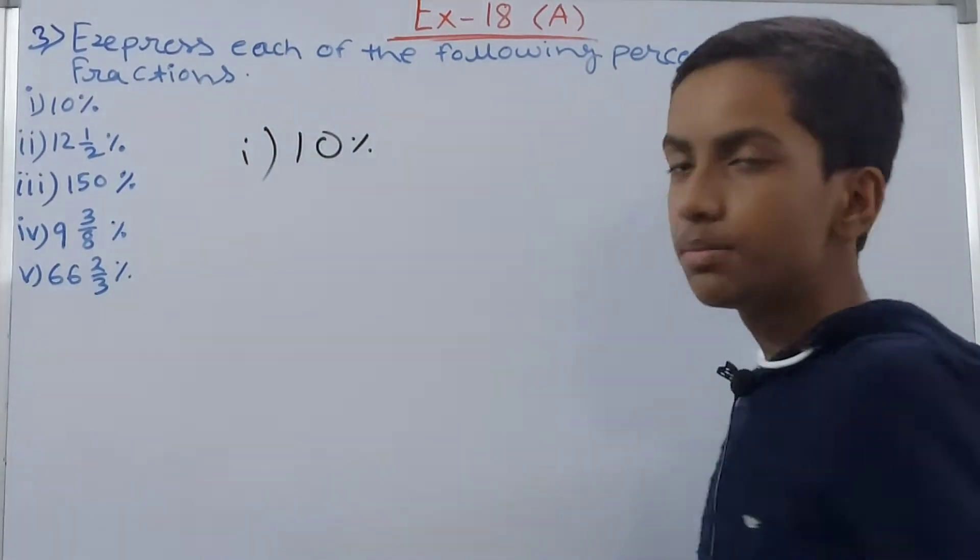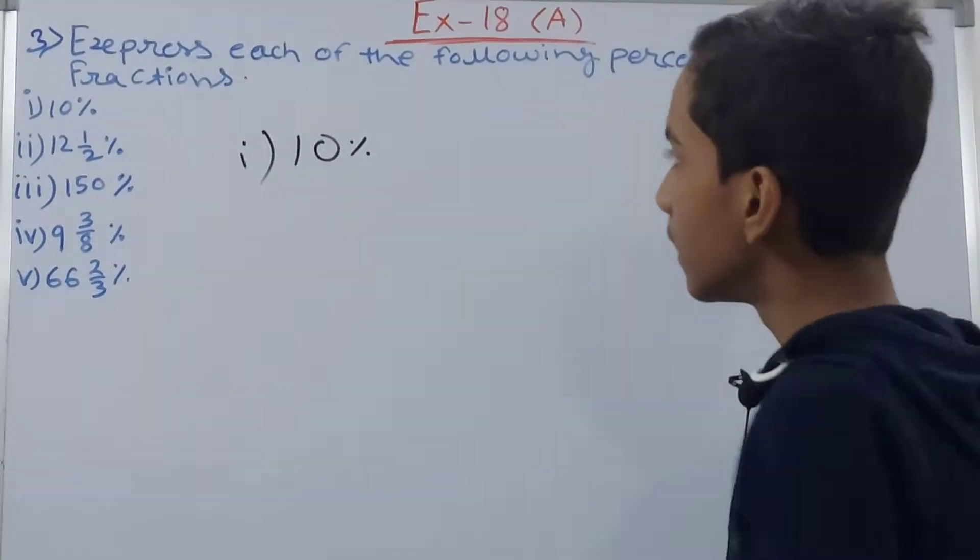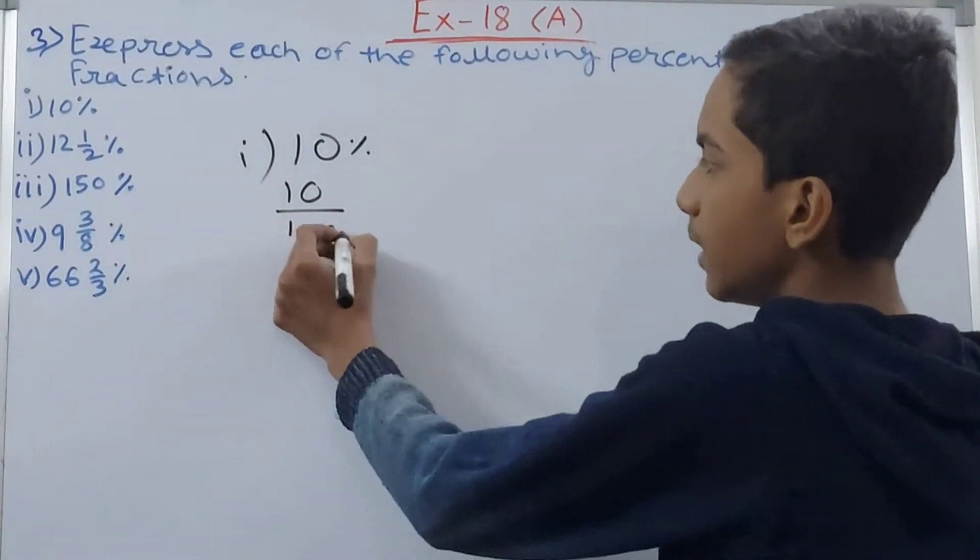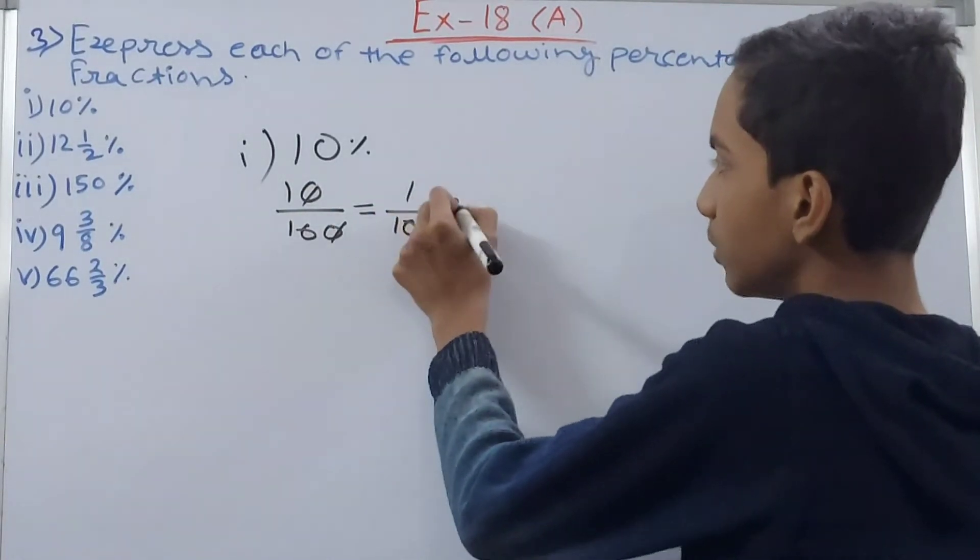First one we have 10 percent. It's very simple, we will divide 10 percent by 100, so you get here 10 upon 100. Cut this 0, cut this 0, so you get 1 upon 10. So this becomes our answer.